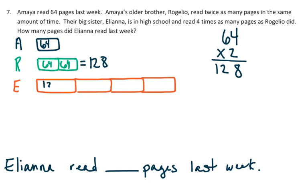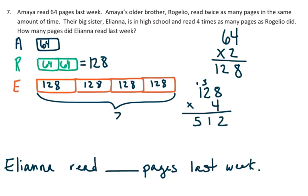So Eliana is 128, 128, 128, and 128. And to solve that one, you can do 128 times 4 and find the product there, and that would be 512. So Eliana read, this is what the question was asking you for, so Eliana read 512 pages last week.